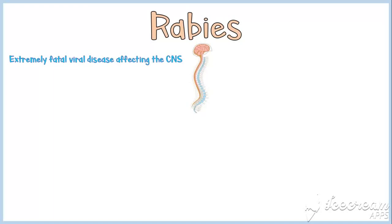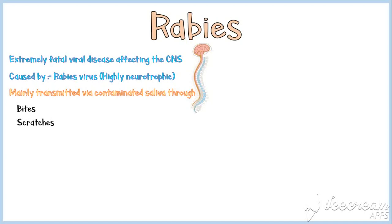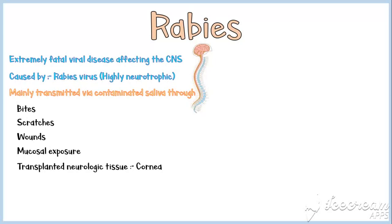Rabies is an extremely fatal viral disease affecting the central nervous system, caused by the highly neurotrophic rabies virus. This virus is mainly transmitted via contaminated saliva of infected animals through bites, scratches, wounds, mucosal exposure, and rarely through transplanted neurologic tissues, such as cornea.